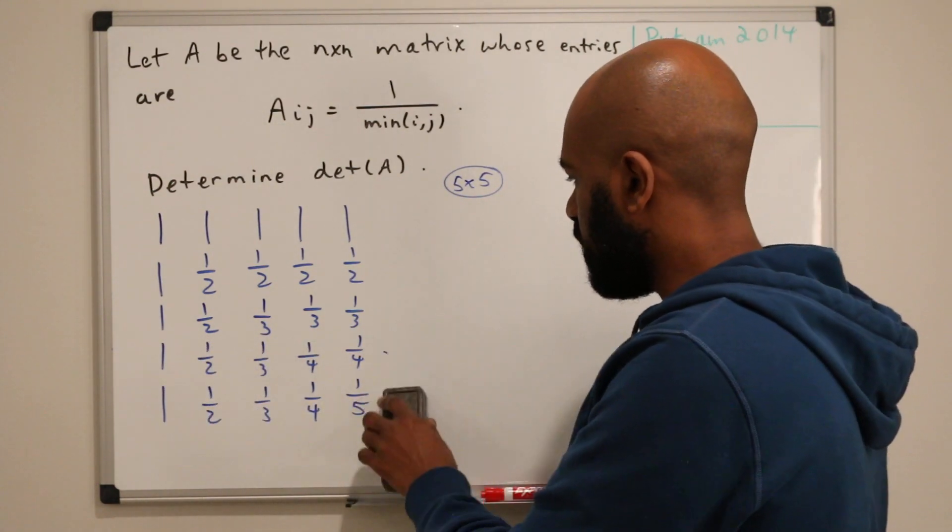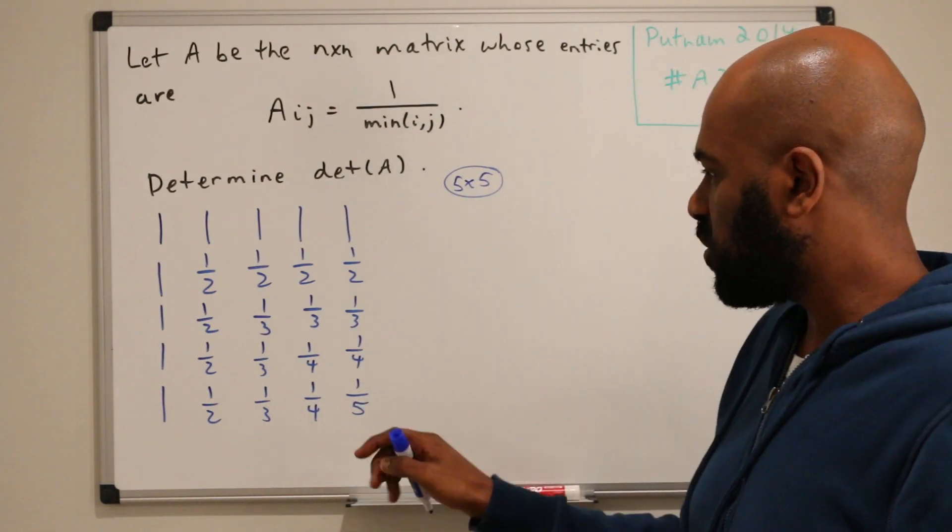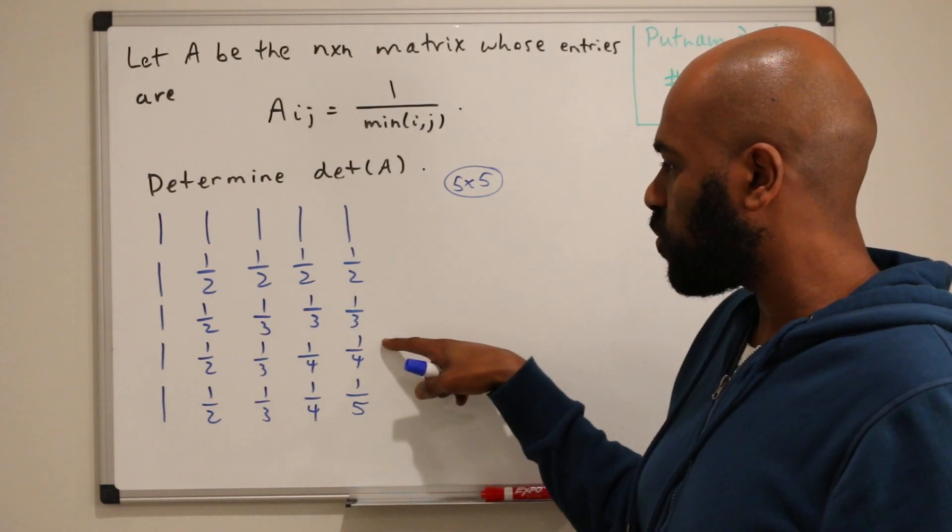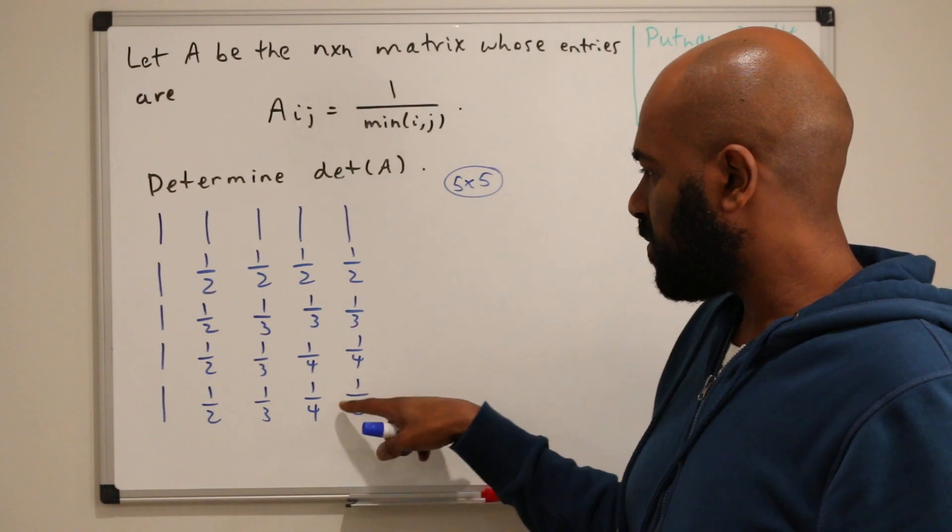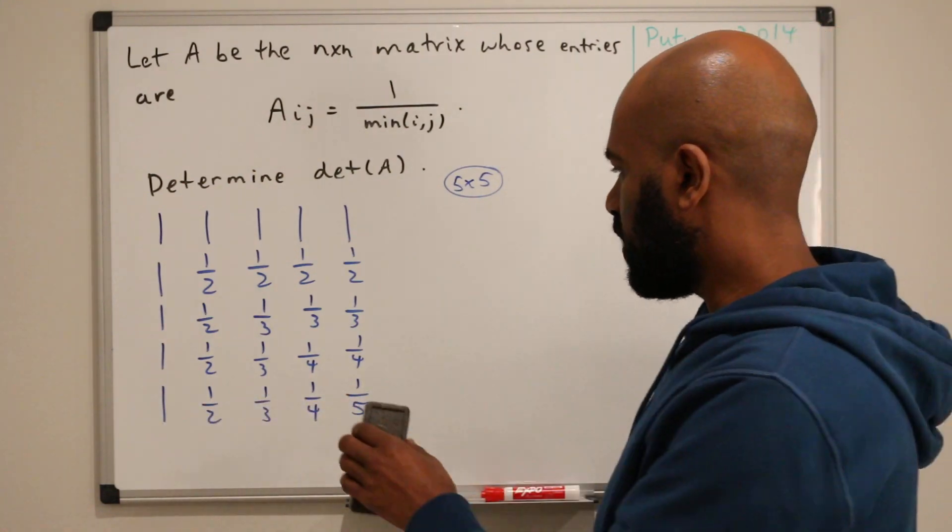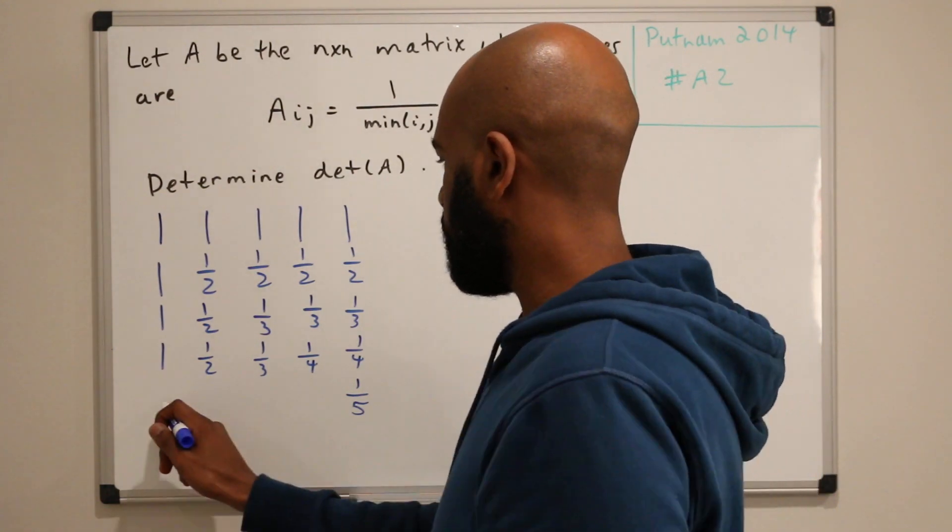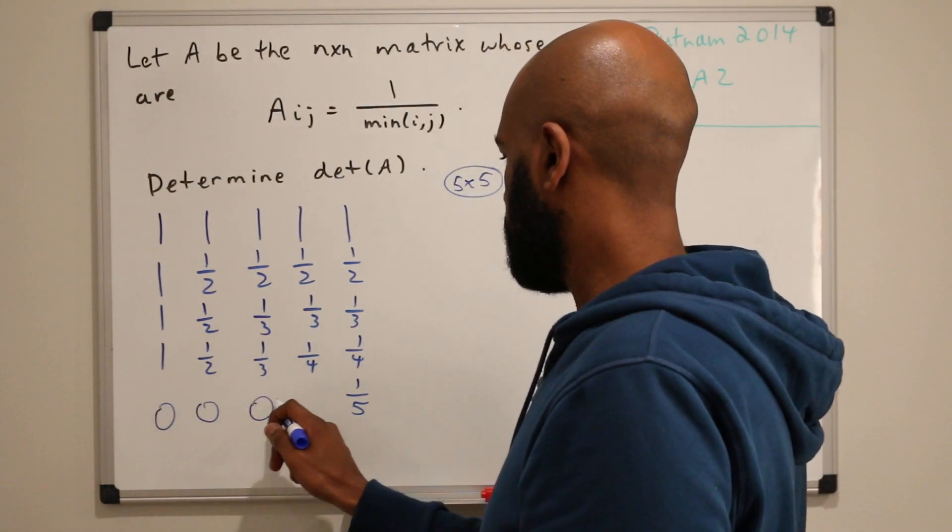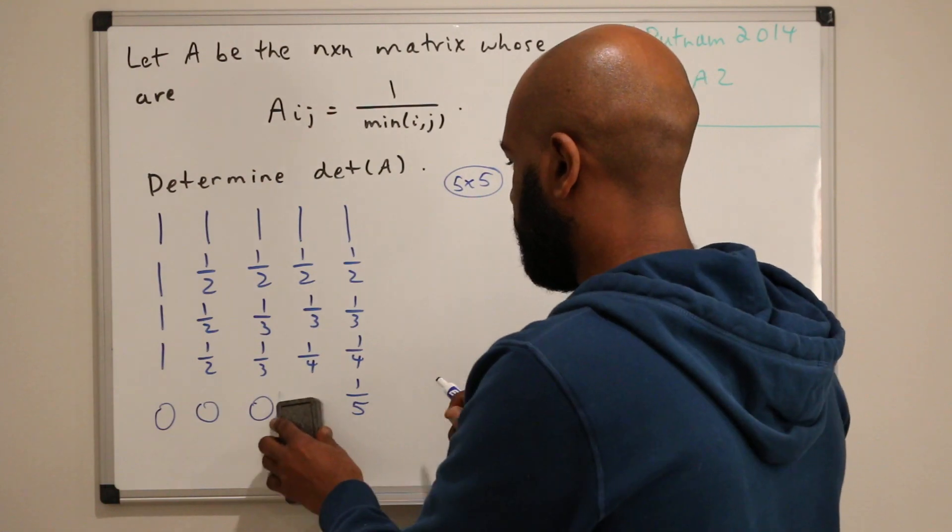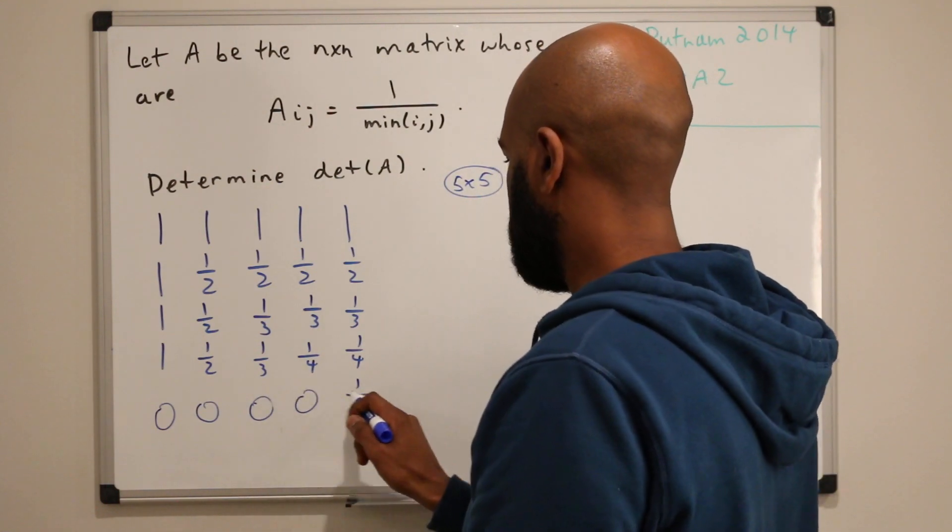So if we apply a row operation where we take this row and subtract this row, we'll be left with something here but all of these entries are eliminated. So let's do that. We'll have zeros all over here and then one-fifth minus a fourth.